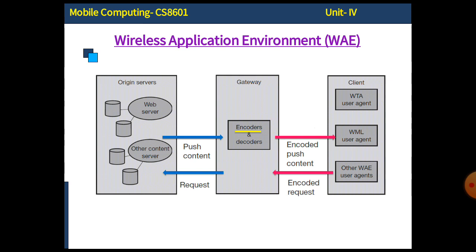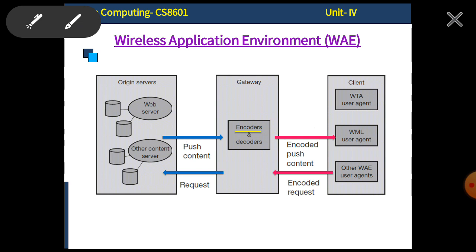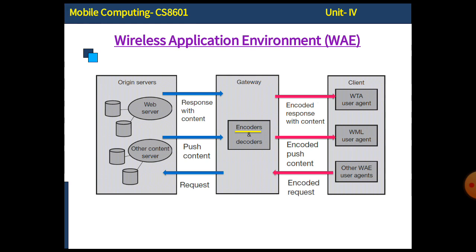The WML user agent receives the content from the gateway and stores it in the mobile device so the user can access all the information. The origin server also sends responses, which are confirmation of the request. The responses reach the gateway and are converted into encoded form. Client to gateway communication is in WML form, and gateway to servers is in HTTP form. The gateway performs a lot of interoperable services.